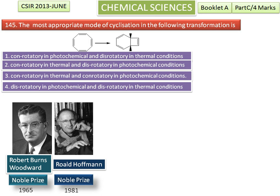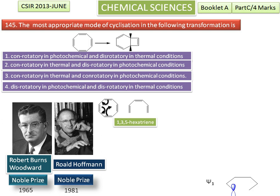In cyclooctatetraene, only 3 pi electrons are involved in this electrocyclic ring closure. We can consider this as a 3 pi electron system like 1,3,5-hexatriene. Now we construct the molecular orbital diagrams for 1,3,5-hexatriene to understand the stereochemistry of these reactions.